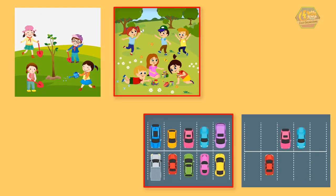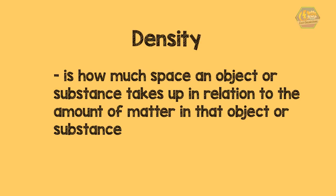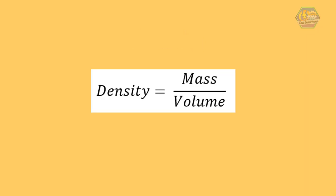Based on the examples given, we can easily define density. Density is how much space an object or substance takes up in relation to the amount of matter in that object or substance. Scientifically, density is the mass per unit volume.